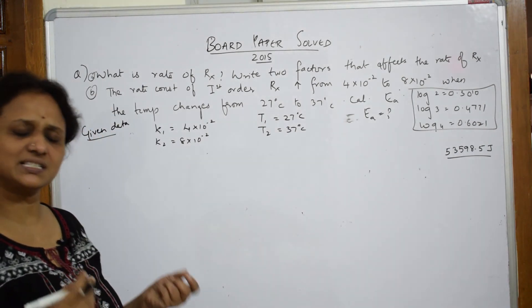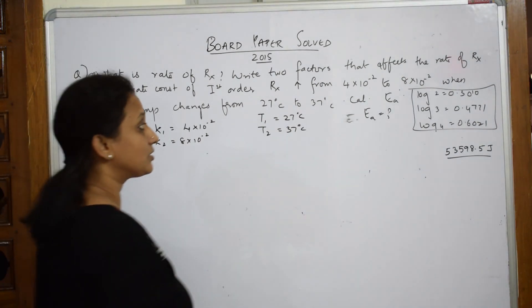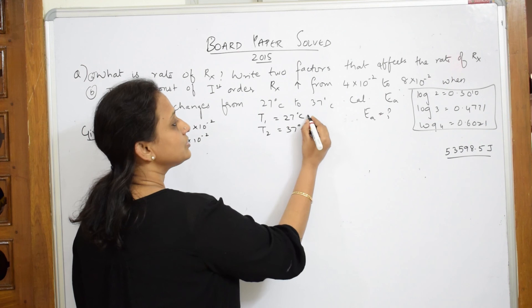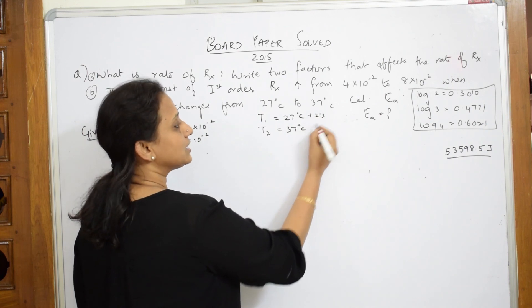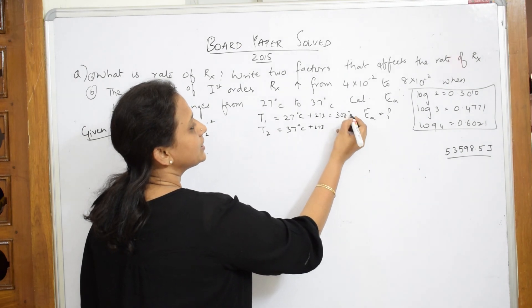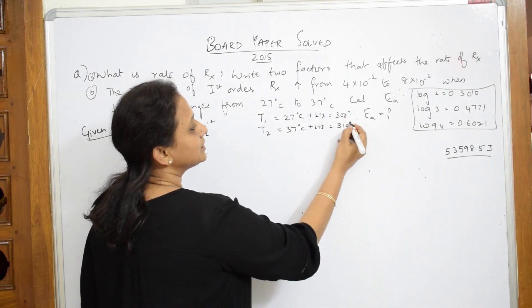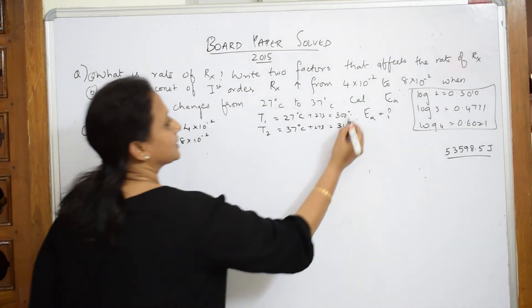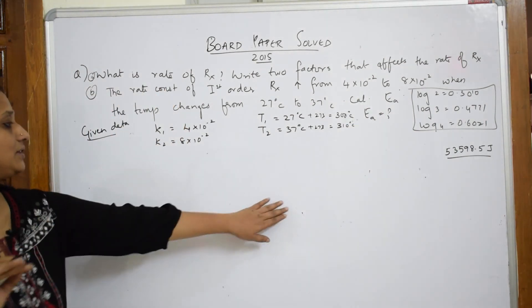As soon as this is given to you, it's simple Arrhenius equation. But remember, as soon as this temperature is given to you, try to add your 273 Kelvin to both. Then only it will get converted to 300 degrees and this becomes 310 degrees. My data is ready. I will apply in the formula.